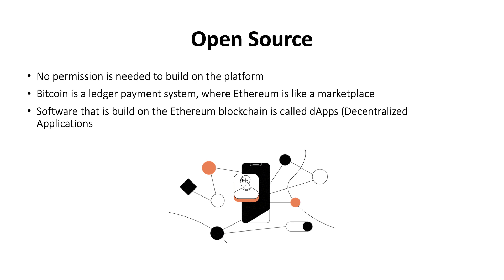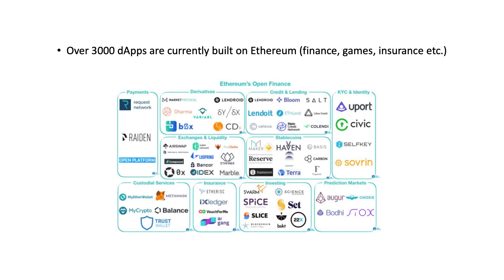The software that developers build on the Ethereum blockchain is called dApps, short for decentralized applications. We can think of Ethereum as being the 'www' of any website on the internet — Ethereum is the base layer, while the rest of the URL serves as the application built on top of it. For example, in www.finmeup.co.za, the 'www' serves as the Ethereum layer.